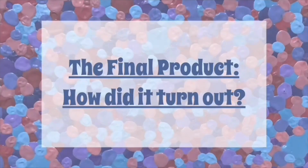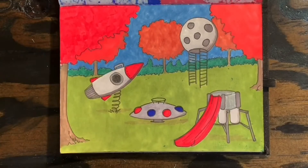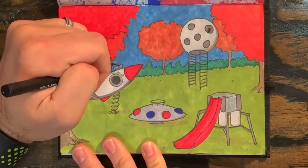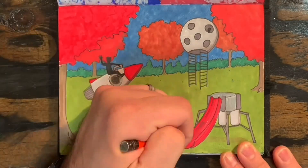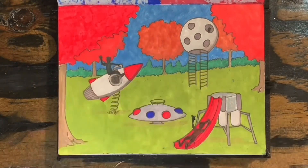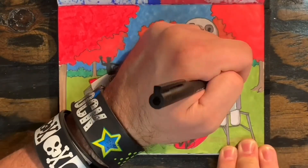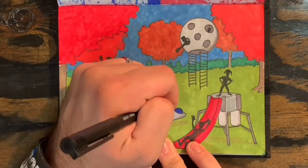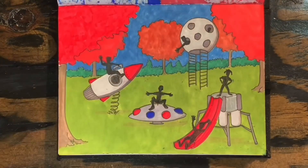My space-themed playground is nearly complete. I'm really happy with the way it turned out. There's only one thing left to do and that's add some kids to this playground. I hope you liked the way your playground turned out and I will see you next time. Bye!